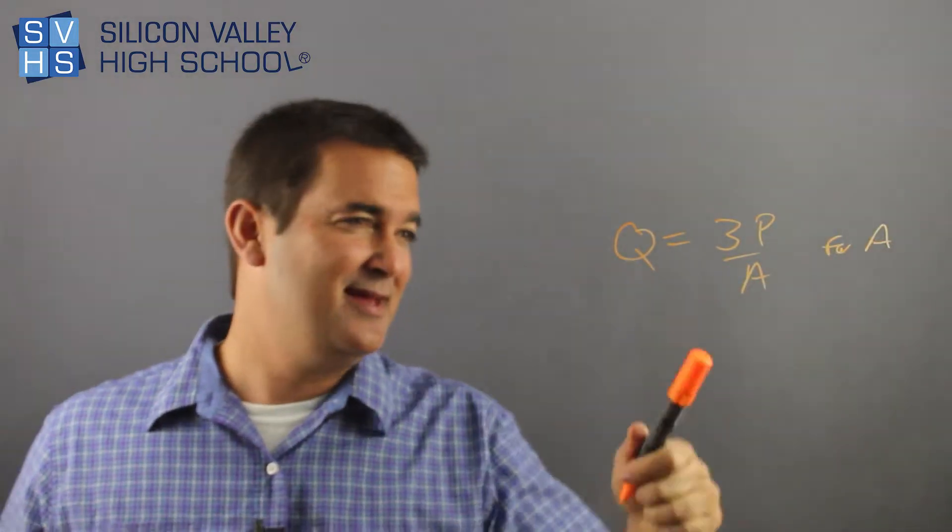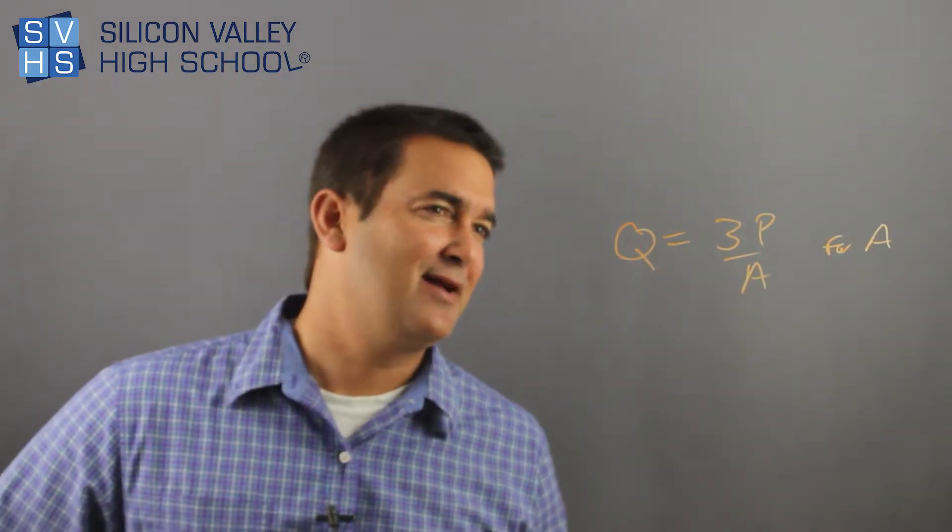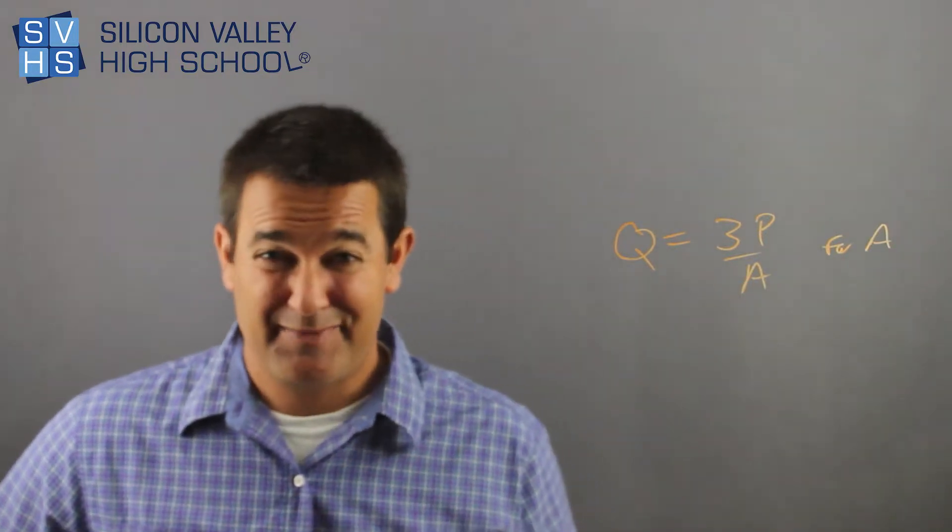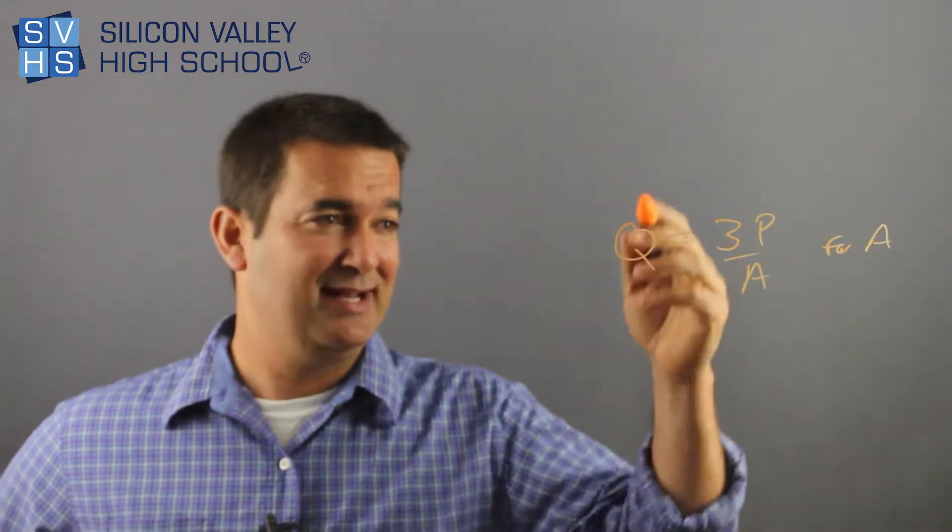In other words, get A alone. And it's kind of weird. I don't really know what to do. The A is on the bottom. How do I fix that? How do I get it to the top?